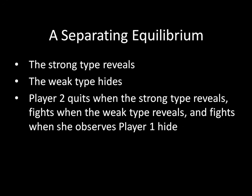Think about what's going on here. Player 2 quitting when the strong type is revealing, fighting when the weak type is revealing, and fighting when she observes Player 1 hide. There's one piece of information here that we don't actually observe in equilibrium — Player 2 doesn't actually, in equilibrium, fight when the weak type reveals, because that actually never occurs on the equilibrium path. Nevertheless, this is a critical piece of information. This is the same sort of logic and principles we saw when we learned about subgame perfect equilibrium, where in an equilibrium we have to state not only what happens on the equilibrium path of play, but also what would happen off the equilibrium path if players were to do something else.